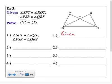SPT is congruent to RQT, and I also know that PSR is congruent to QRS. My task is to prove that PR is congruent to QS.